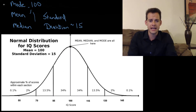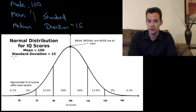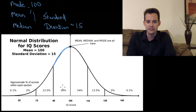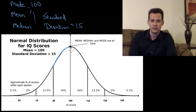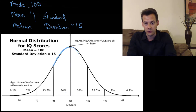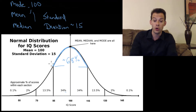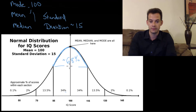Interpreting scores on the distribution: between 85 and 100 is about 34% of people, and the same 34% score between 100 and 115. That means about 68% of people — nearly 70% — score between 85 and 115, within one standard deviation of the mean. Extending to two standard deviations, about 13.5% score between 70 and 85, and another 13.5% between 115 and 130. So from 70 to 130 we have about 95% of people.